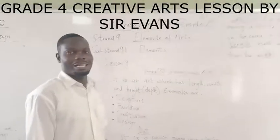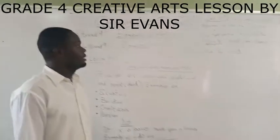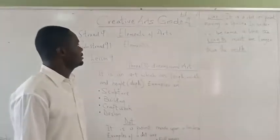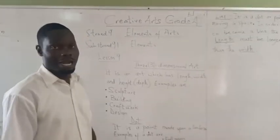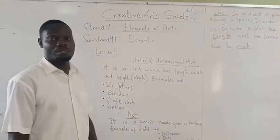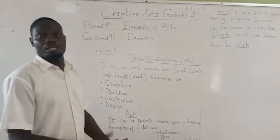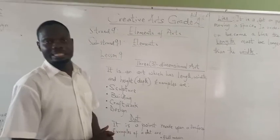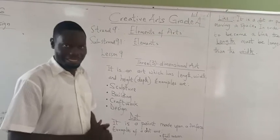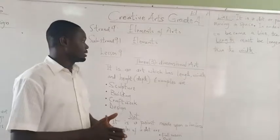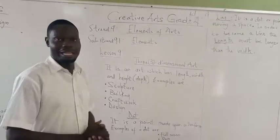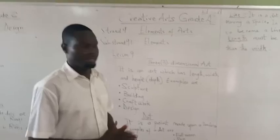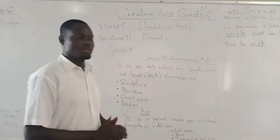Good morning class, we are back again. We are doing elements of arts. Remember we started with dimension. We talked about 2D, meaning 2-dimensional arts, and we said they have length and width or length and breadth. Now let's look at the three dimensional arts.